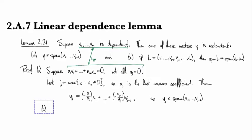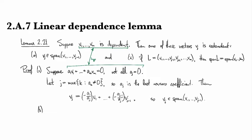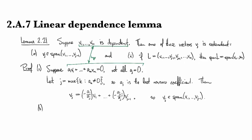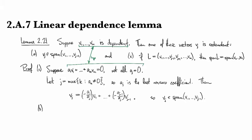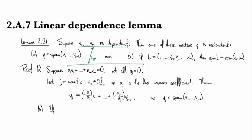To prove part B, let's take something from the span, so that is from the span of everything, all the v's.